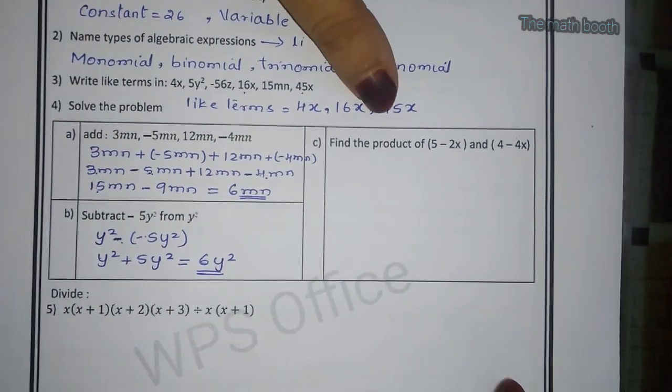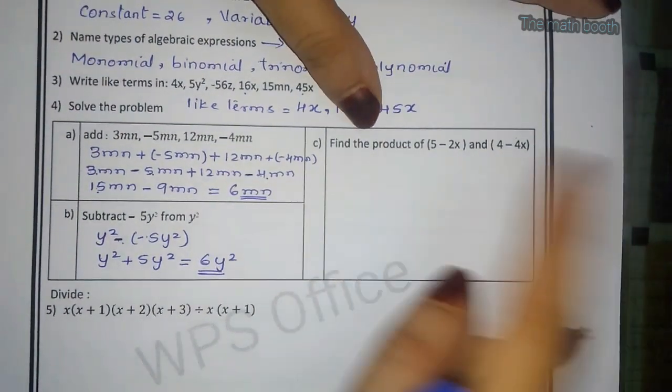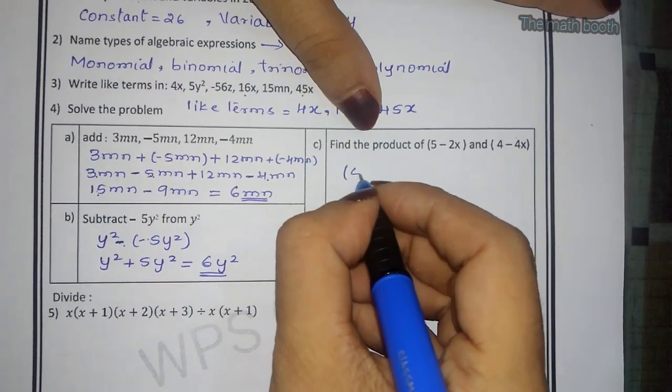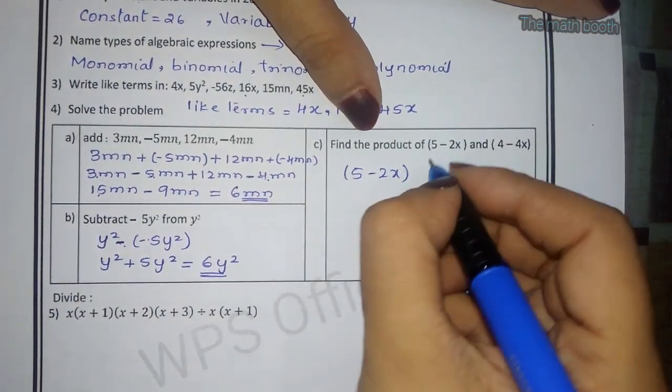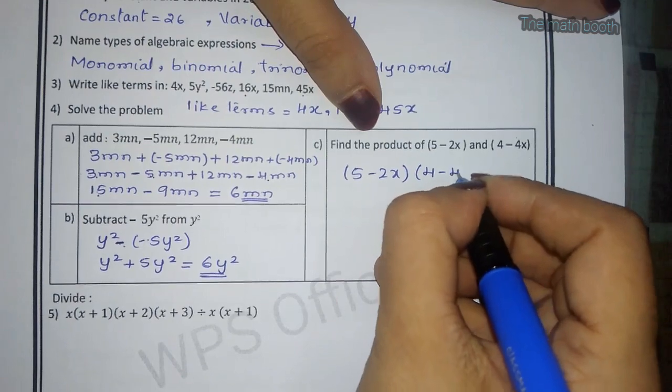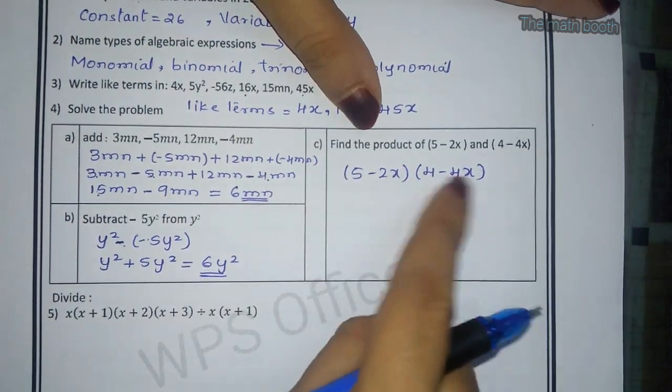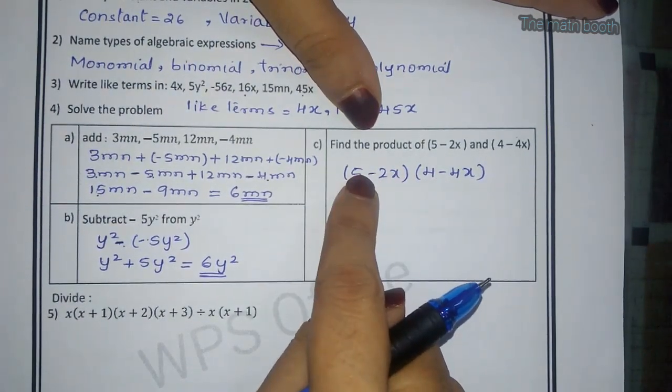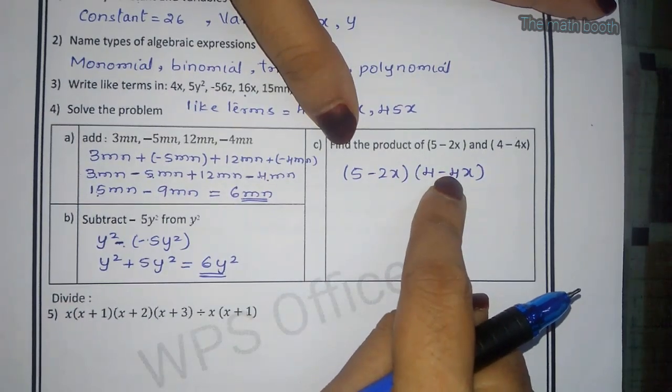Now let us see here what they have given. Find the product of 5 minus 2x into 4 minus 4x. We know how to do this, we will split one bracket, another bracket we will keep as it is.